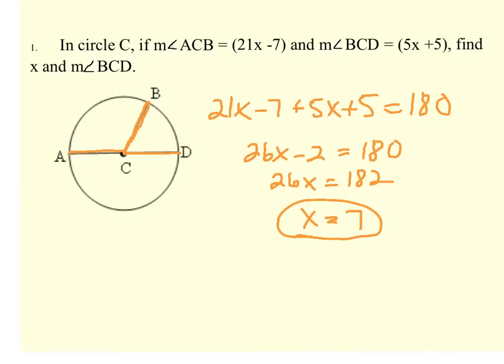Once we know that x equals 7, we can go ahead and plug that back in. In this case, we want to find the measure of angle BCD. So the measure of angle BCD, since BCD is 5x plus 5, we're going to do 5 times 7, which is 35, add 5 to that, and we get 40 degrees. So the measure of angle BCD would be a 40 degree angle.